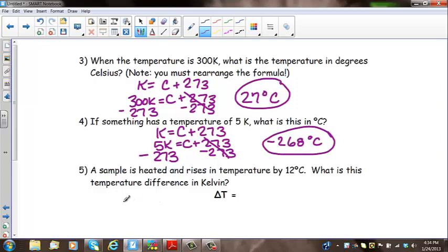If something has a temperature of 5K, what is this in degrees Celsius? So again, K equals C plus 273. I'm writing down my formula. I'm substituting in 5K. I'm going to subtract 273 from both sides because I'm trying to find C. 5 minus 273, you can see is going to be a negative number. So 5 minus 273 is negative 268 degrees Celsius.